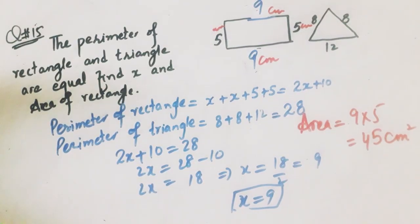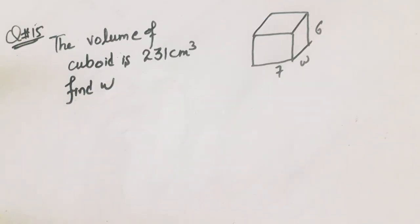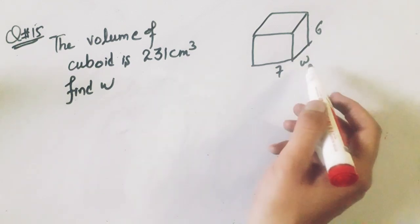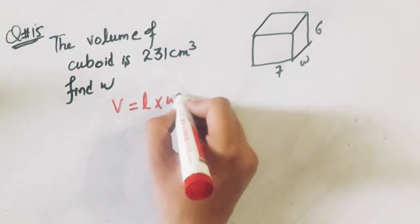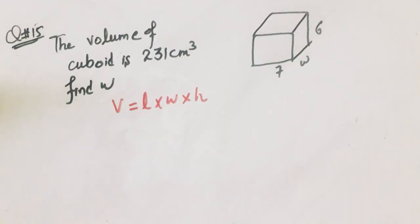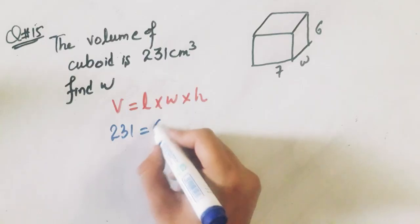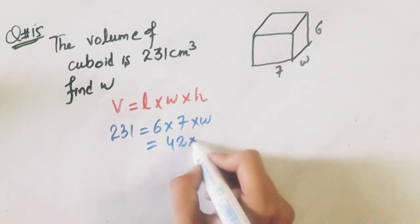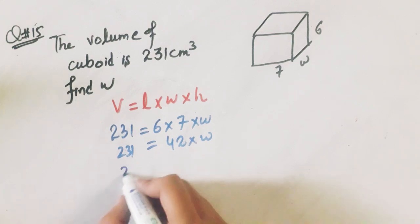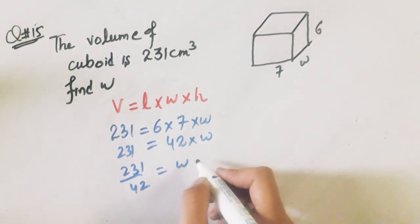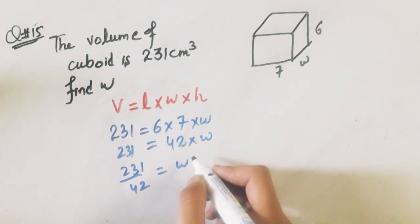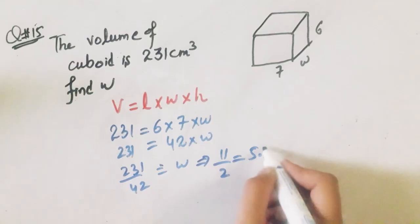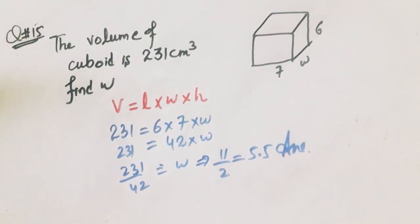Now we will solve the other part of question number 15. The volume of a cuboid is given as 231 centimeter cube and a diagram is also given. You have to find the value of W. Volume is equal to length multiply width multiply height. Substituting all values: 231 is equal to 6 multiply 7 multiply W, so 42 multiply W equals 231, so W equals 231 divided by 42, which gives 11/2, and that is 5.5.